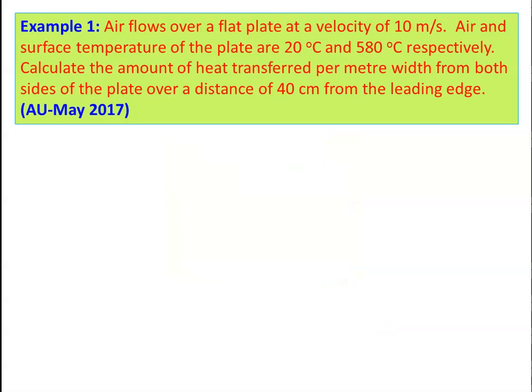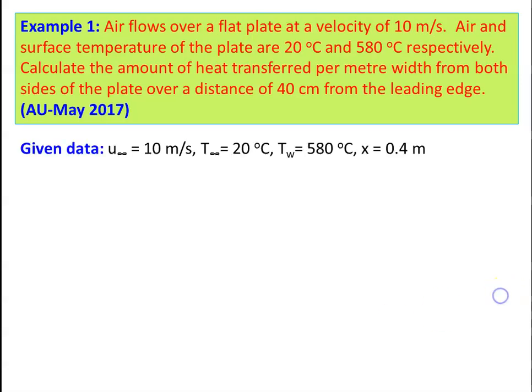Example 1: Air flows over a flat plate at a velocity of 10 meters per second. The air temperature is 20°C and the surface temperature of the plate is 580°C. Calculate the amount of heat transfer per meter width from both sides of the plate over a distance of 40 centimeters from the leading edge. Given data: U∞ = 10 m/s, T∞ = 20°C, Tw = 580°C, x = 0.4 m.